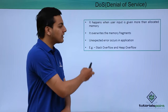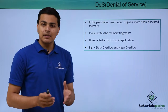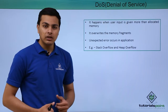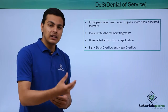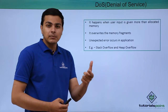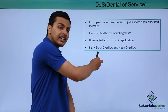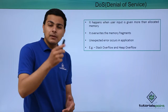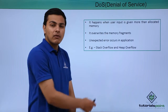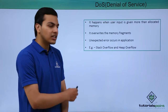A DOS attack happens when user-supplied input is greater than the memory allocated to the application. For example, if an application can receive 20 bytes of user input and we enter 30 bytes, that may result in overwriting memory fragments, causing unexpected errors and disrupting the normal flow of the application. This issue can result in a stack overflow or heap overflow, and sometimes can lead to remote code execution vulnerability.